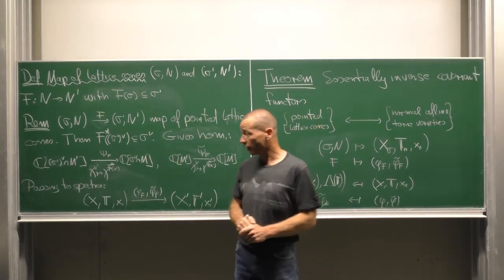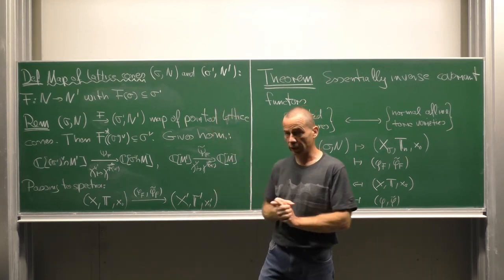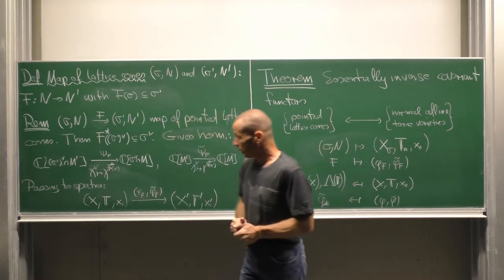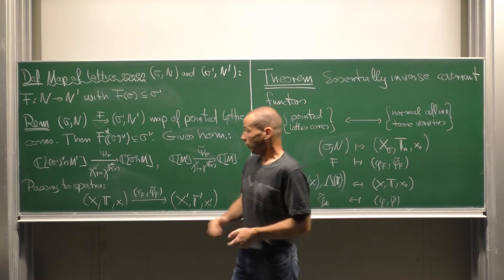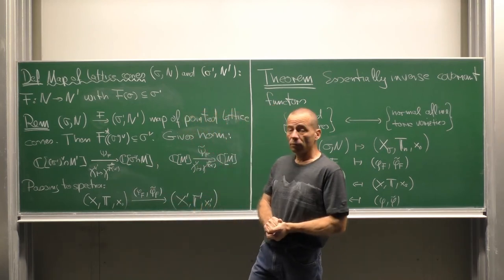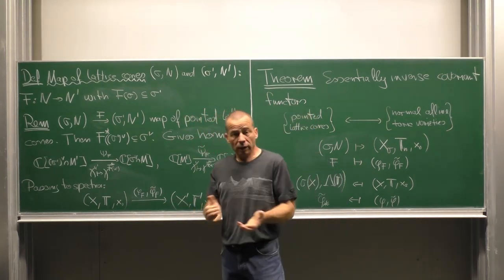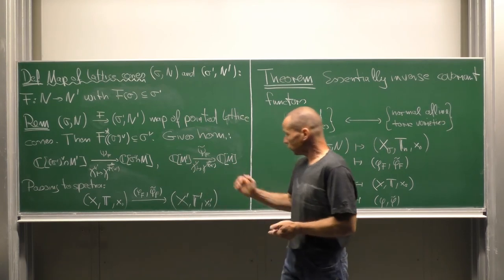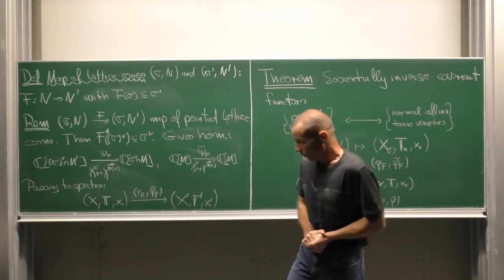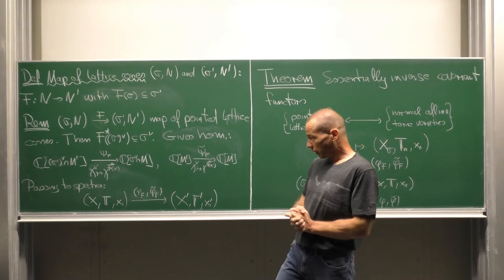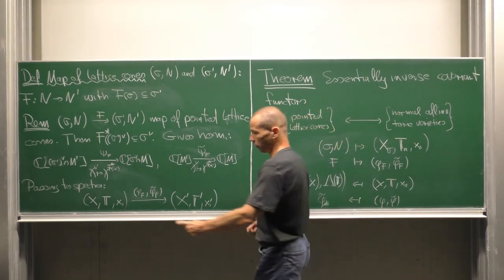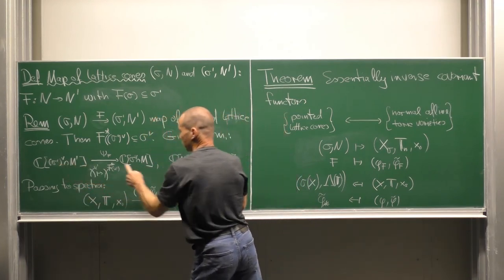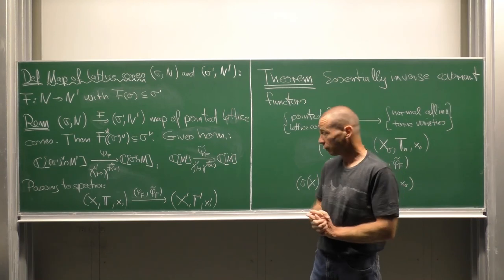This allows us to define a homomorphism between the associated monoid algebras, sending chi^u' to chi^f_dual(u'). Similarly, we proceeded earlier in the setting of tori, that means from the group algebra into the other group algebra. And if we pass to the spectra, we obtain morphisms of the varieties associated with the monoid algebras, that means our toric varieties.